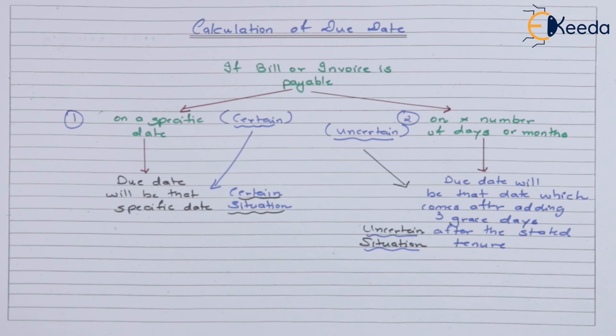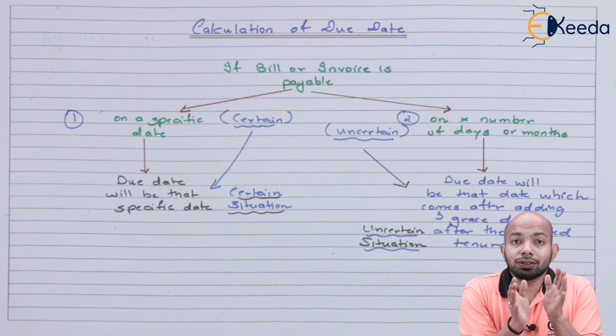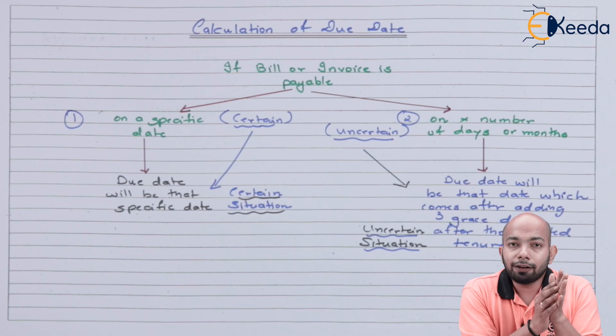So especially when there is an uncertain situation you need to decide the correct due date. Make sure we are not calculating the average due date right now, this is just a calculation of due date. So whenever you have an example of three months after this thing or three months after that thing, calculate that three months and then add three days to it. That will give you the exact due date as per the situation. So this is what we have to discuss about when we have to discuss the concept of average due date.